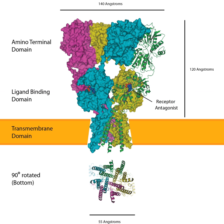AMPAR subunits differ most in their C-terminal sequence, which determines their interactions with scaffolding proteins. All AMPARs contain PDZ-binding domains, but which PDZ domain they bind to differs. For example, GLUA-1 binds to SAP-97 through SAP-97's class 1 PDZ domain, while GLUA-2 binds to PICK1 and GRIP/ABP. Of note, AMPARs cannot directly bind to the common synaptic protein PSD-95 owing to incompatible PDZ domains, although they do interact with PSD-95 via stargazin, the prototypical member of the TARP family of AMPAR auxiliary subunits. Phosphorylation of AMPARs can regulate channel localization, conductance, and open probability.